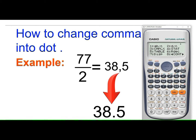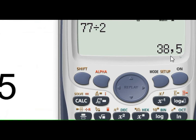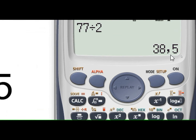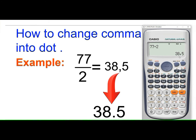Search for DISP, which is number 7. Press 7, and this time choose number 2 for the comma mode. Press number 2, and we can see that we have returned to the comma format. This is the way to convert between the decimal point and comma format in the scientific calculator. Thank you for watching.